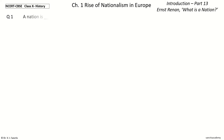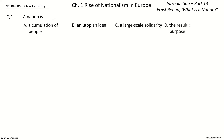Question 1. A nation is dash. The options are: accumulation of people, an utopian idea, a large-scale solidarity, the result of a common purpose. And the answer is a large-scale solidarity. So, a nation is a large-scale solidarity.